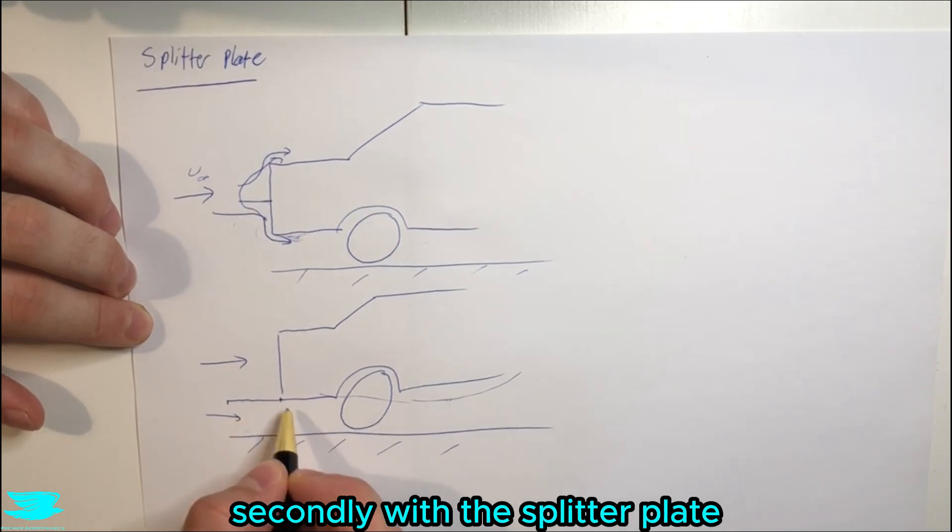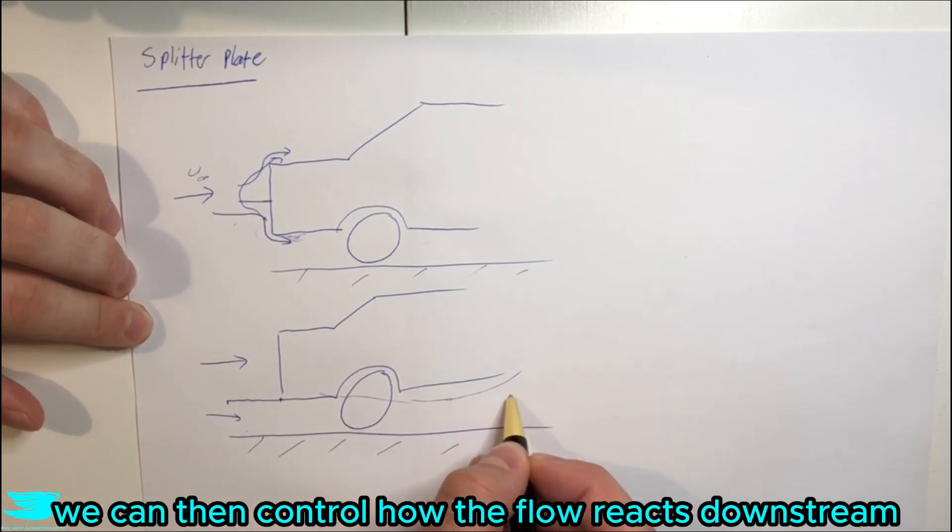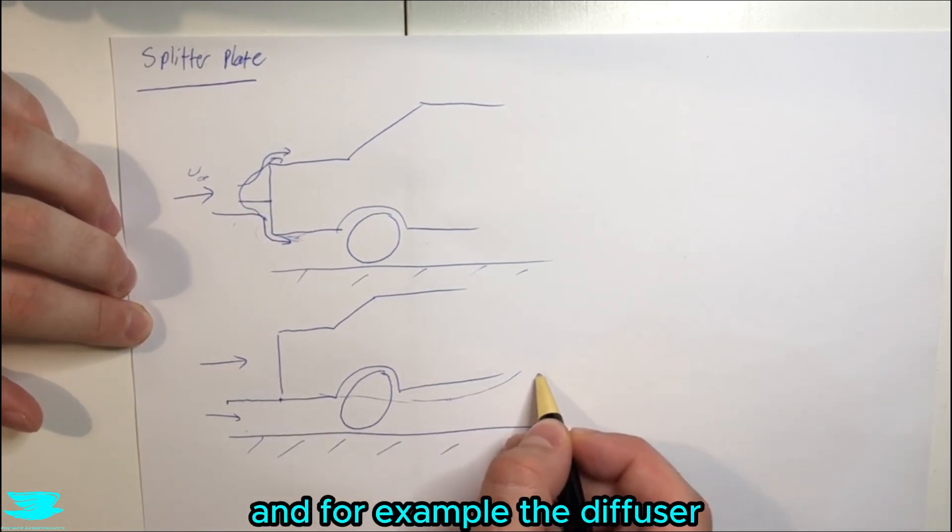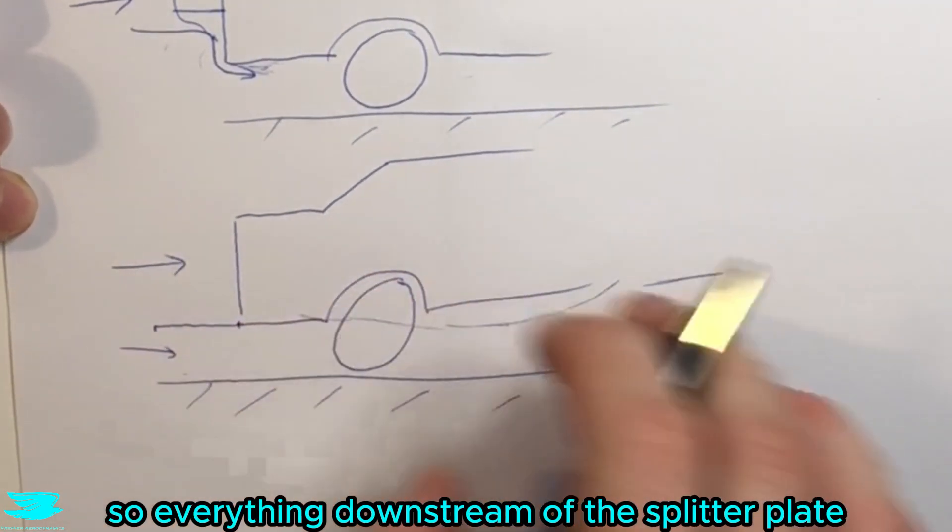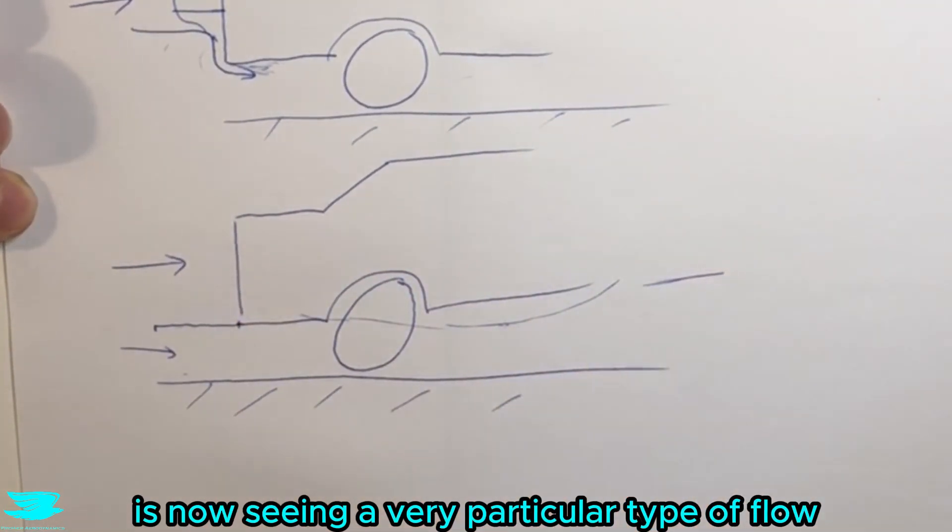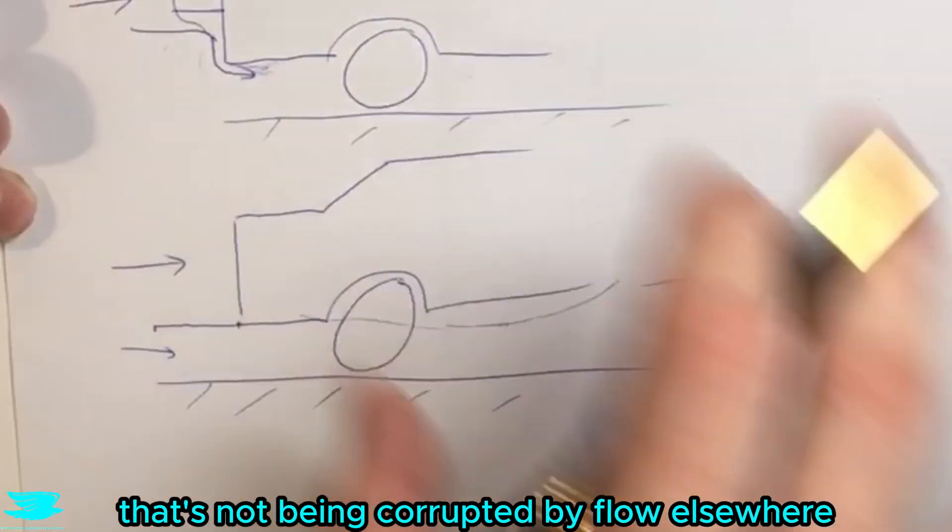Secondly, with the splitter plate, we can then control how the flow reacts downstream and, for example, the diffuser, it will see a particular type of flow. So everything downstream of the splitter plate is now seeing a very particular type of flow that's not being corrupted by flow elsewhere.